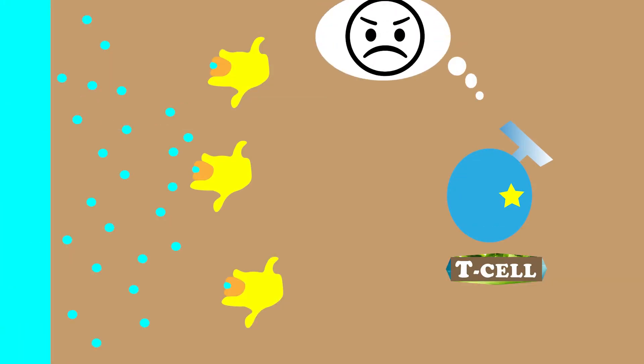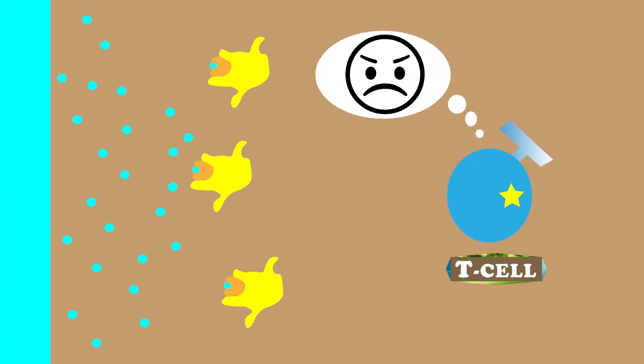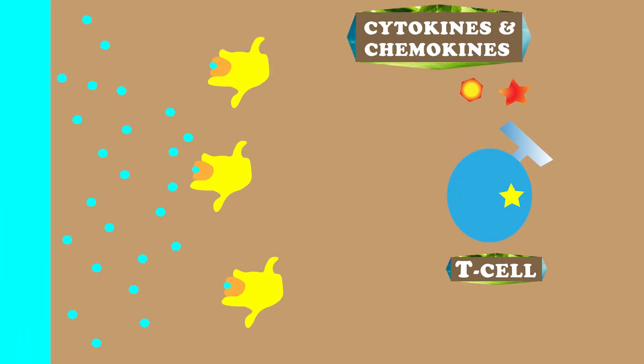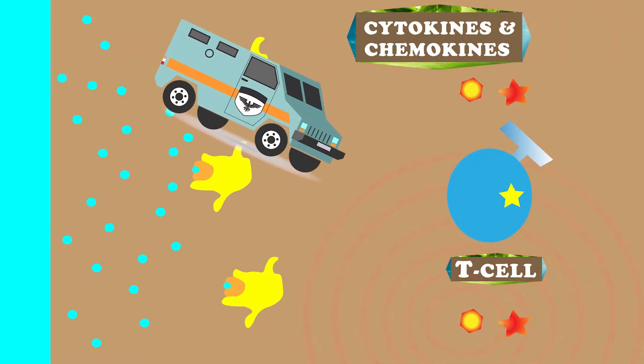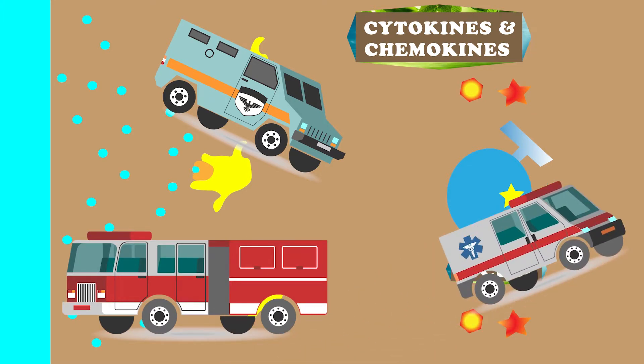But if the T cells decide this foreign invasion should be dealt with, they will release cytokines and chemokines or proteins that send signals to other cells. This is what causes the itchiness and swelling. This signal is like the original arriving officer calling in the SWAT team, fire department, and ambulances as backup.